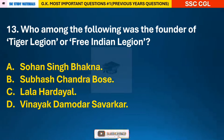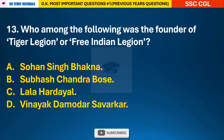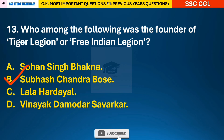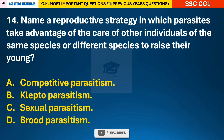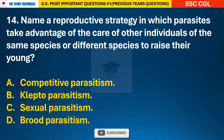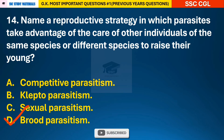Question 13: Who among the following was the founder of Tiger Legion or Free Indian Legion? — answer B: Subhash Chandra Bose. Question 14: Name a reproductive strategy in which parasites take advantage of the care of other individuals of the same or different species to raise their young? — answer D: brood parasitism.